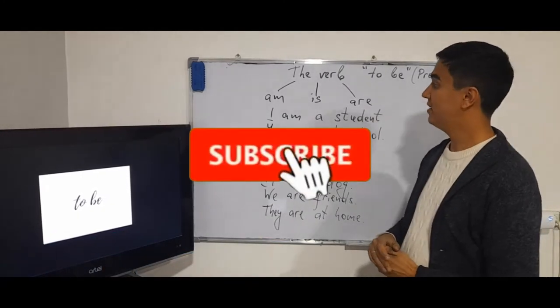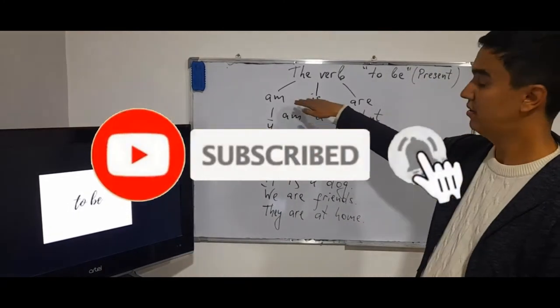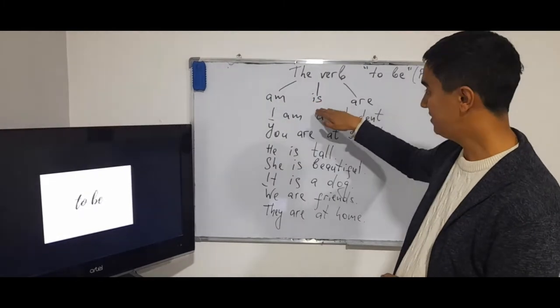So, there are three forms of to be in present: am, is, and are.